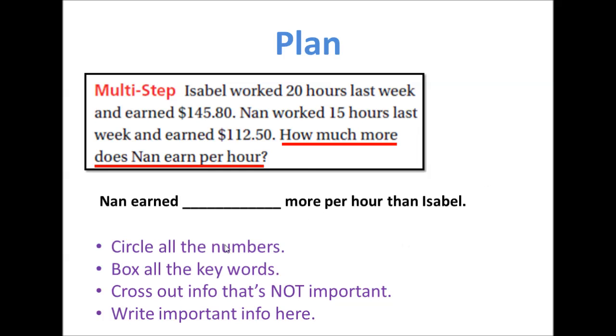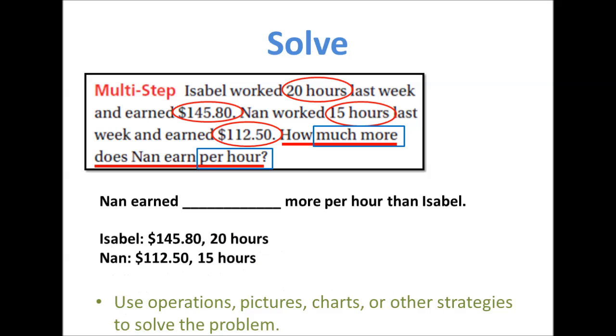Okay so now we're going to plan by going to the planning stage by circling all the numbers, boxing all the keywords, crossing out information that's not important and then write all that important information down. Okay so 20 hours, 15 hours, $145.80, $112.50. Those are all the numbers I circled and this one says how much more does Nan earn per hour?